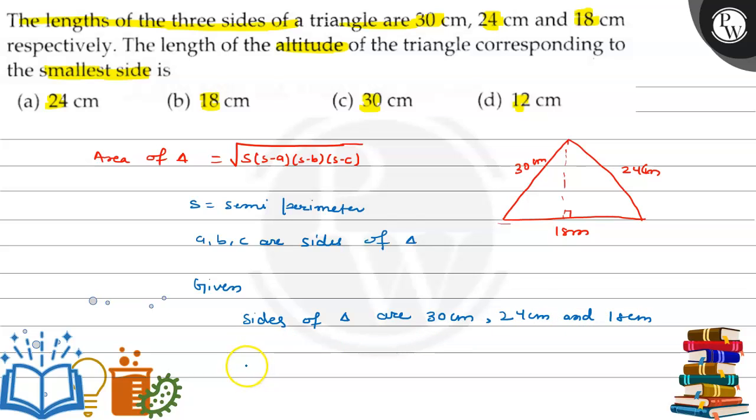Now we can find the semi-perimeter. The formula is S = (A+B+C)/2, the sum of all sides divided by 2. So S = (30+24+18)/2 cm.